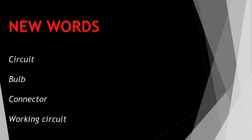In this topic, the new words are: first one — circuit, C-I-R-C-U-I-T, circuit. Second one — bulb, B-U-L-B, bulb. Third one — connector, C-O-N-N-E-C-T-O-R, connector. Fourth one — working circuit, W-O-R-K-I-N-G C-I-R-C-U-I-T, working circuit.